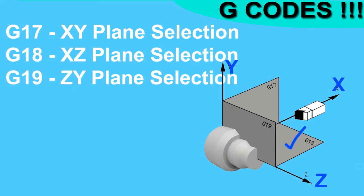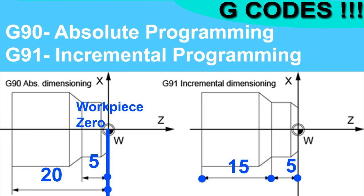G90 is for absolute programming and G91 for incremental programming. In absolute programming, all X and Z dimensions are given with respect to the workpiece zero. In incremental programming, all X and Z dimensions are given with respect to the tool's current position. This code should be mentioned at the start of the program or whenever the positioning system changes.